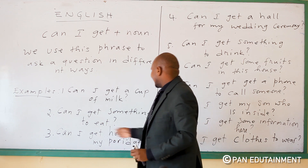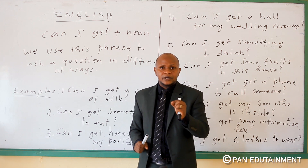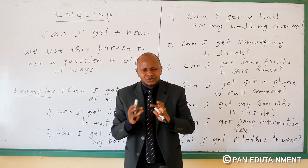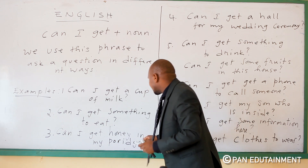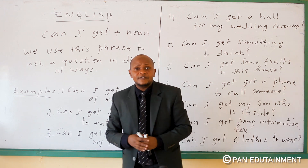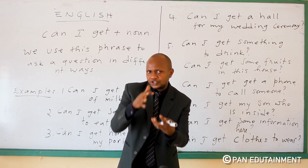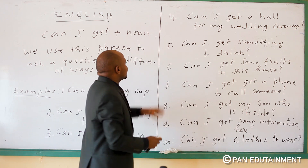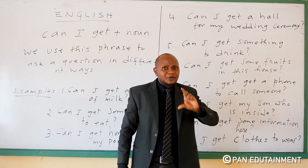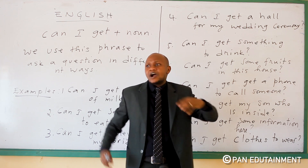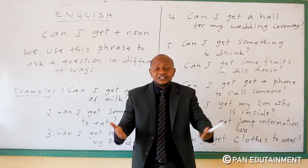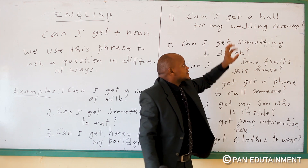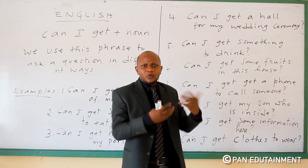Number three: you can say, 'Can I get honey in my porridge?' That is a very good example. Then you can also say, 'Can I get a flower for my wedding ceremony?' Can I get a flower for my wedding ceremony?